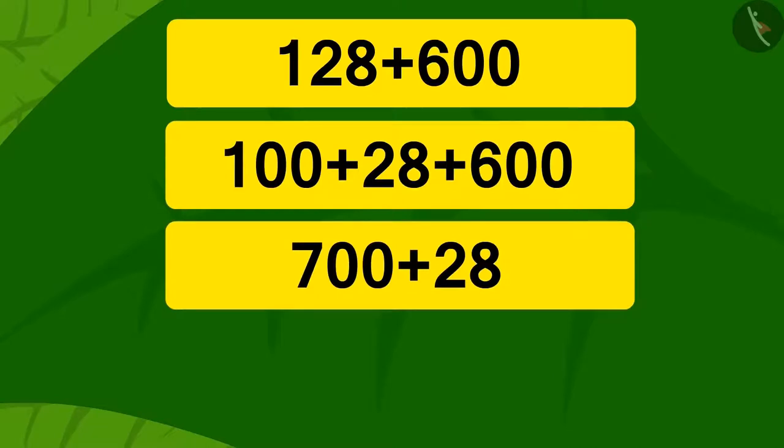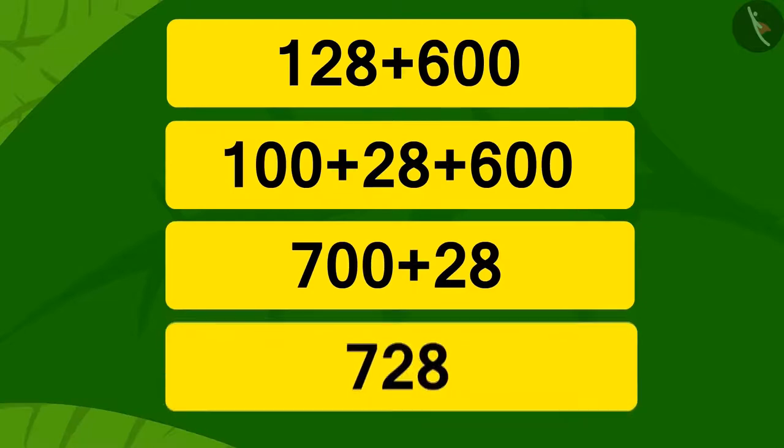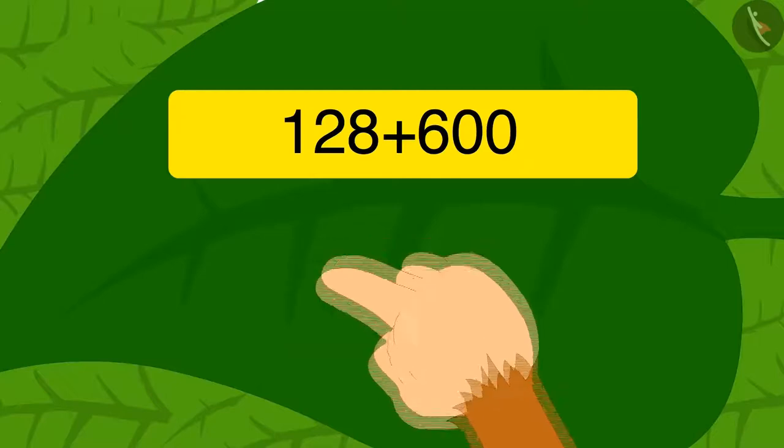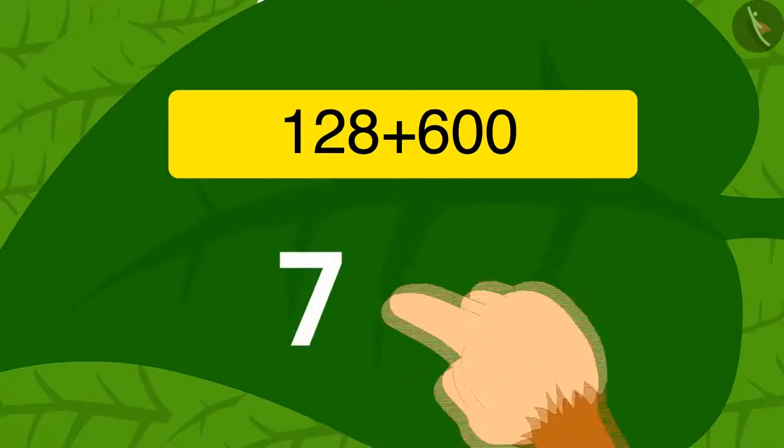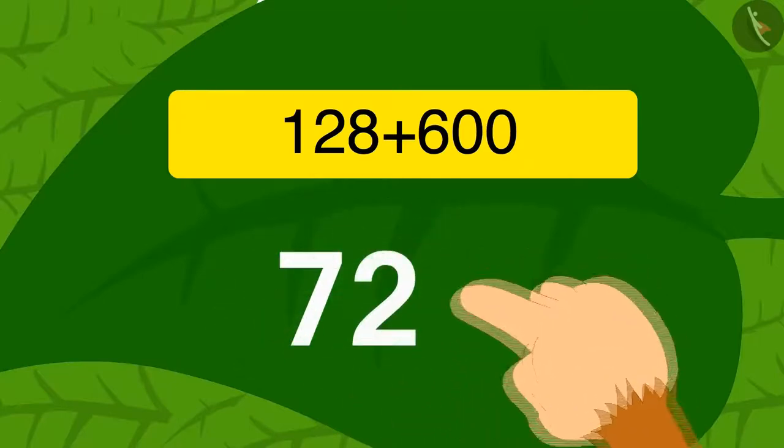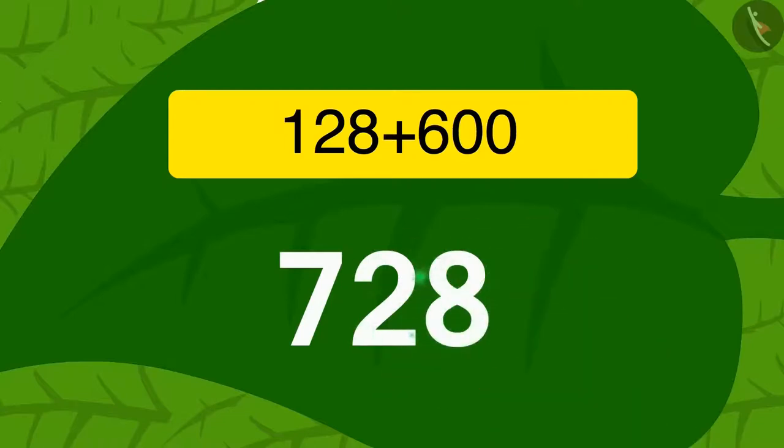Now it's very easy. If you add 28 to 700, you get 728. Babun wrote 728 as the answer on the vine leaf, and the vine got smaller by sinking down even further.